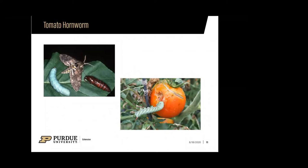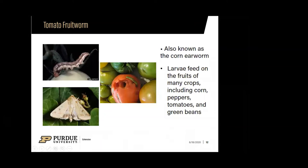Tomato fruit worm is another very common garden insect. It actually has two different names depending on what it's feeding on — when feeding on tomatoes it's called the tomato fruit worm, and when feeding on sweet corn it's called the corn earworm, but it is the exact same insect. You can see a different feeding pattern from the hornworm — the fruit worm bores down into the core, making a pretty big mess of the fruit.